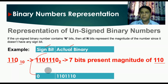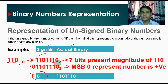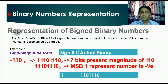So the unsigned binary representation of 110 is 0 1101110. For representation purposes we ignore the leading zero, so in unsigned binary representation you keep only the n bits of binary — that is 1101110. Since the MSB is zero, the number is positive.